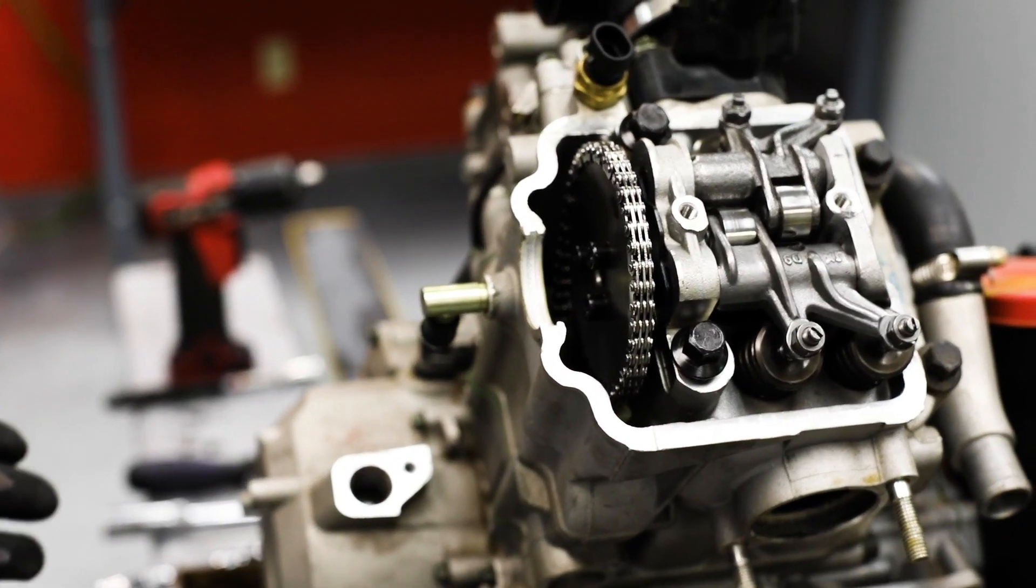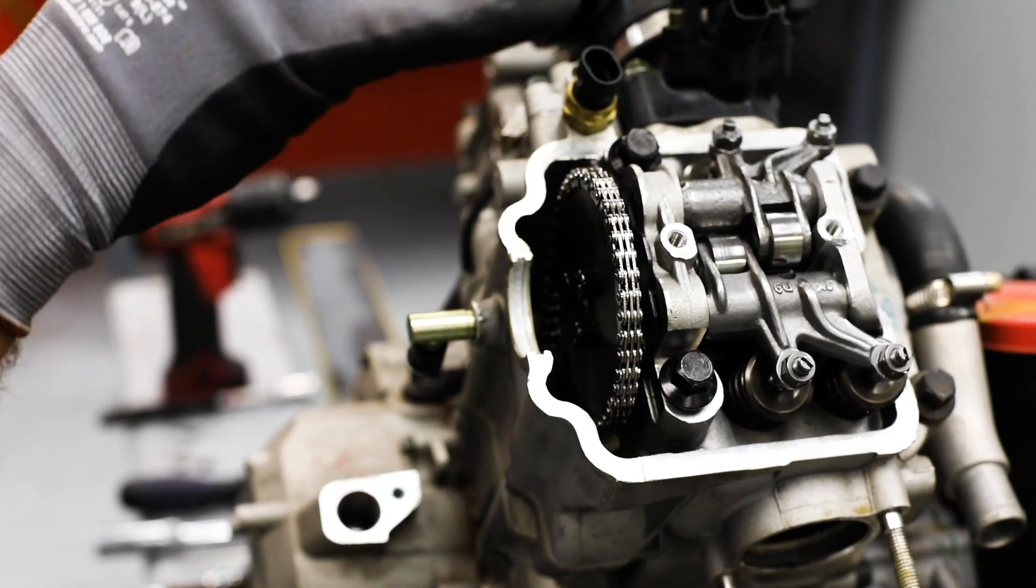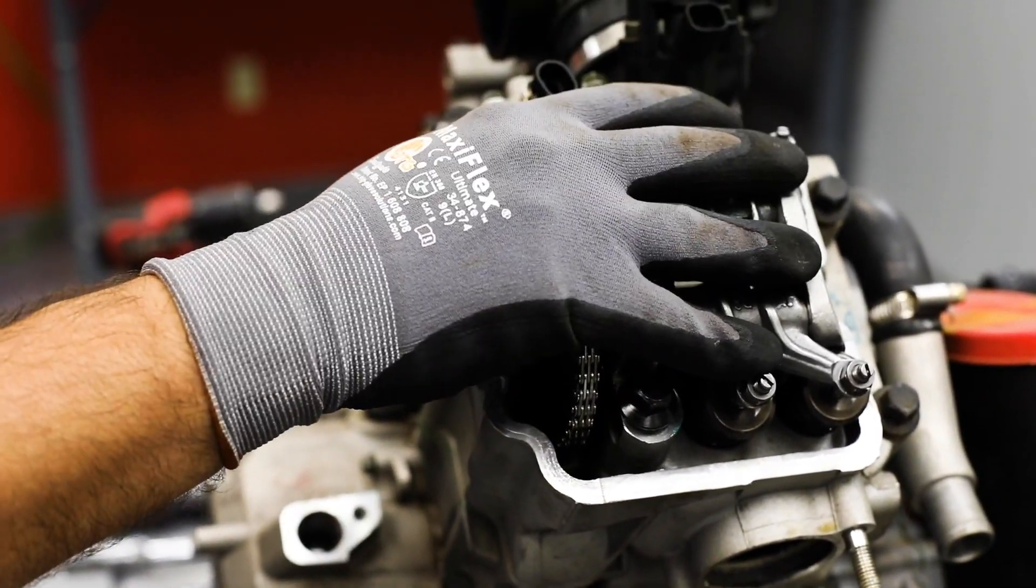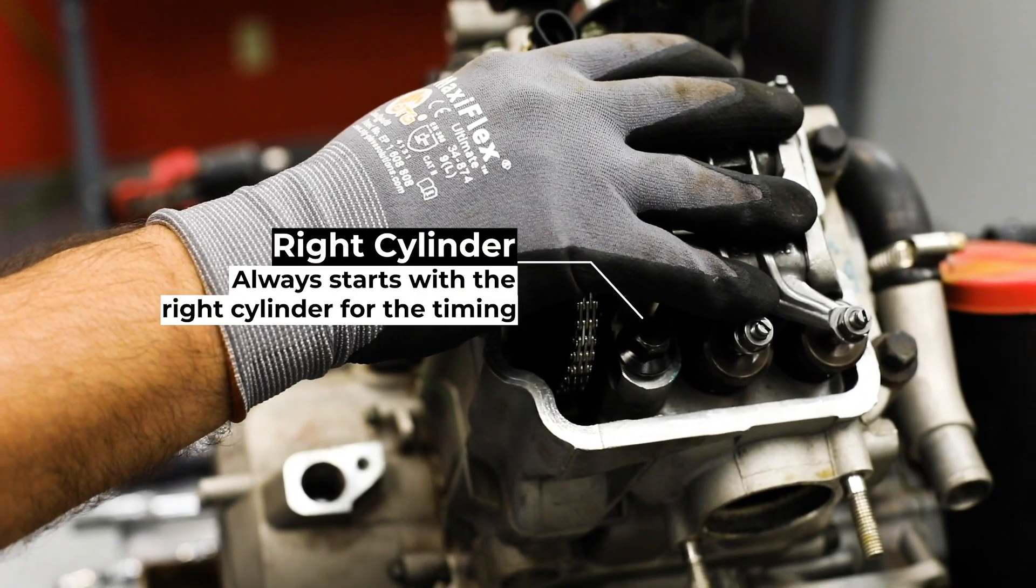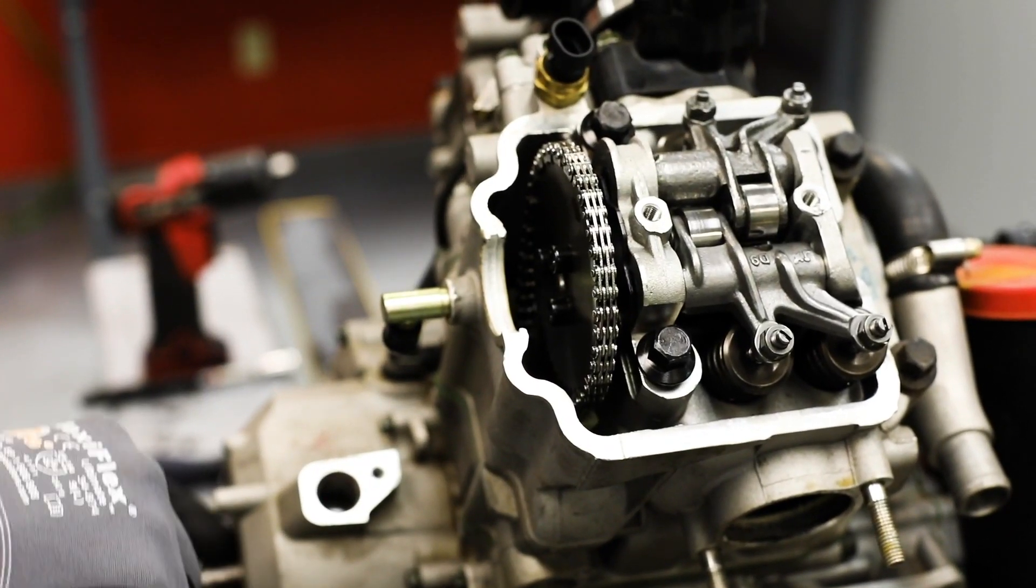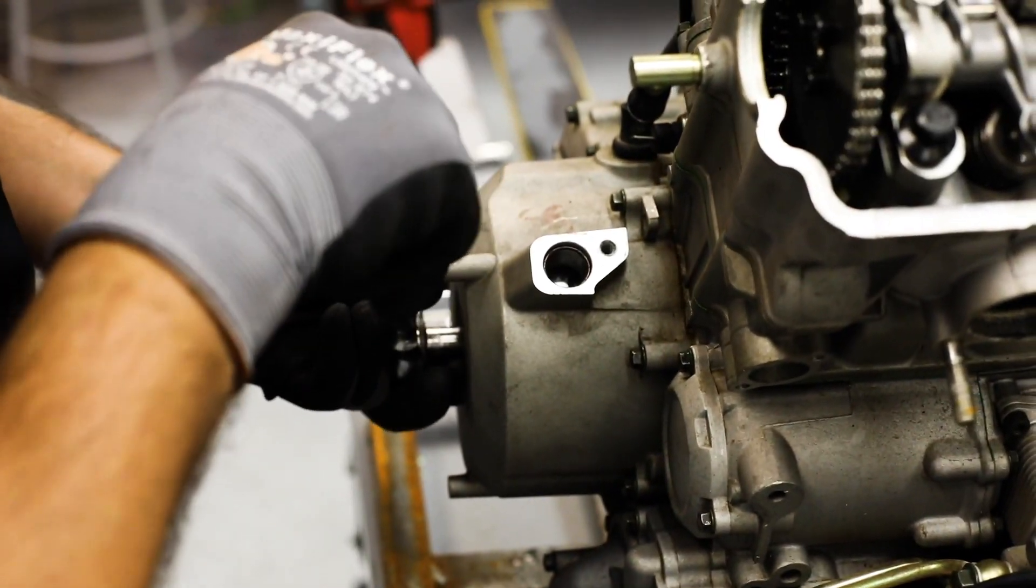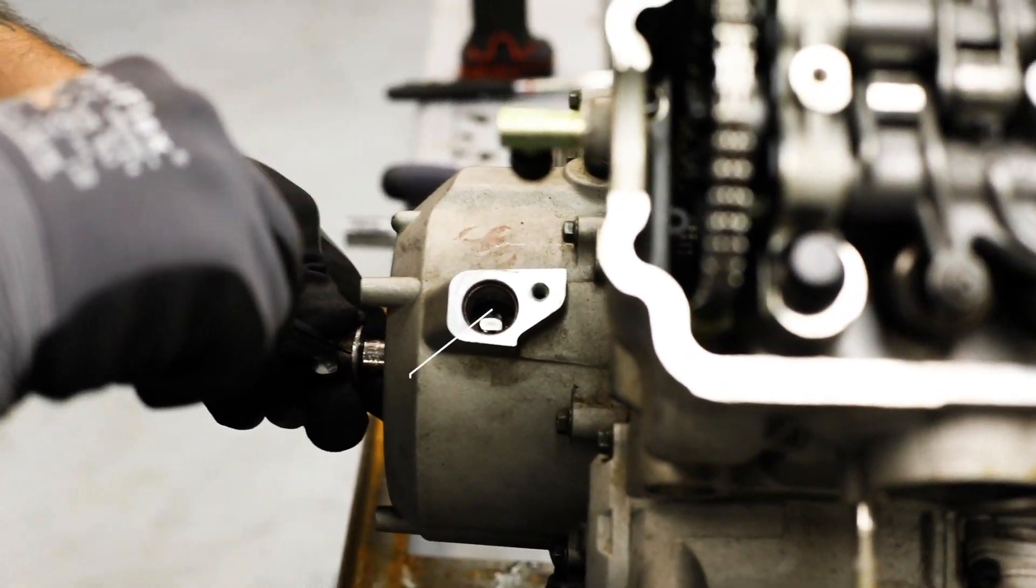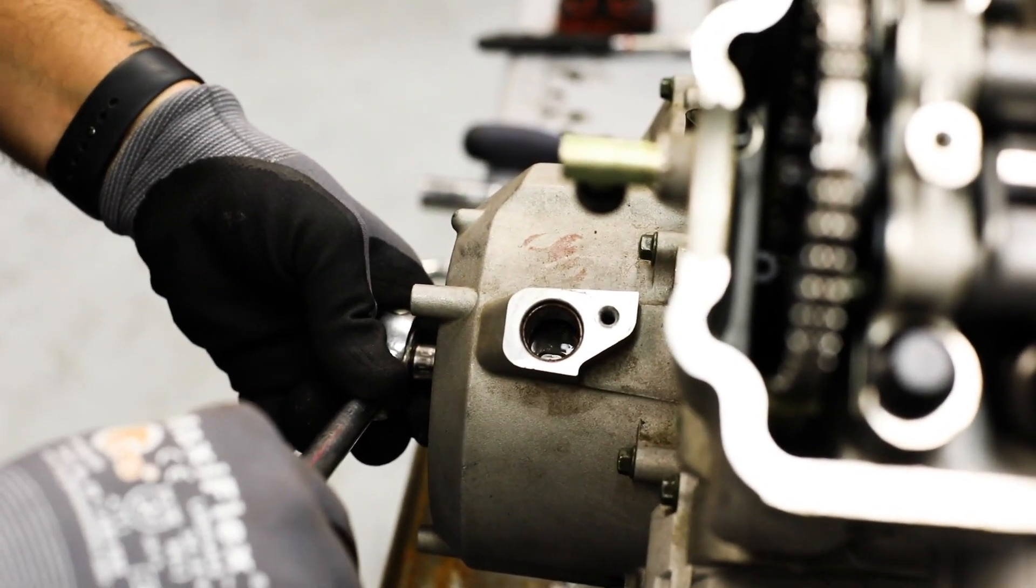The first thing you want to do is the cylinder to the right, which is always first when you start timing the V-Twin. You want to rotate the engine until you see T1 in the window on the flywheel.